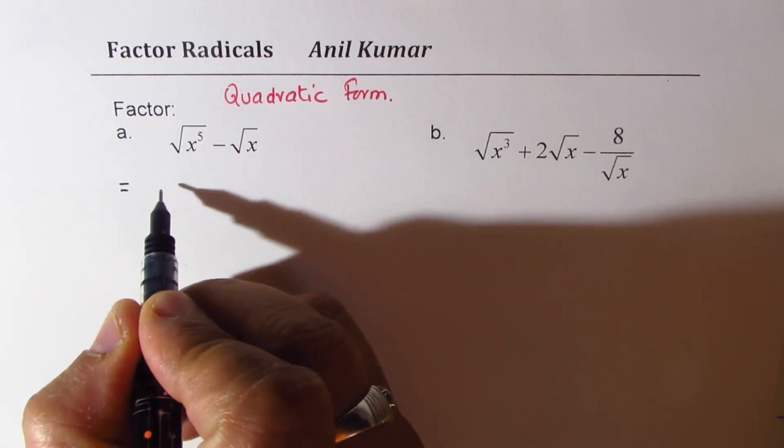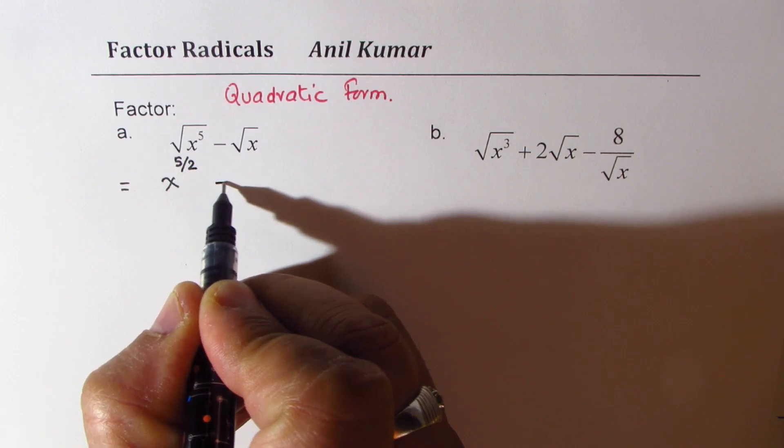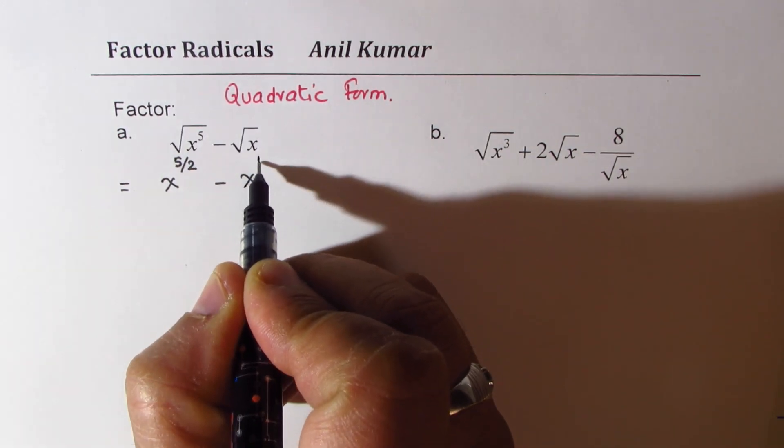We could write this expression as x to the power of 5 over 2 minus x to the power of half, right?